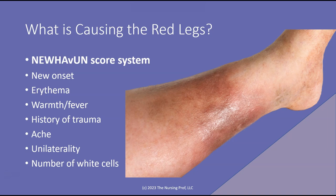When we look at our patient and see that they have redness in their leg, there are two things to consider: could this be venous insufficiency, or could this be cellulitis? We're going to use the New Haven score system. We're looking for new onset — so this isn't a chronic condition for them — redness, warmth or generalized fever, and a history of trauma. Remember, about 60% of cases result from some sort of trauma.